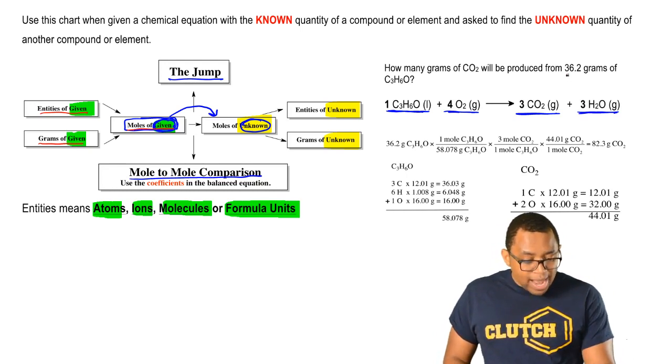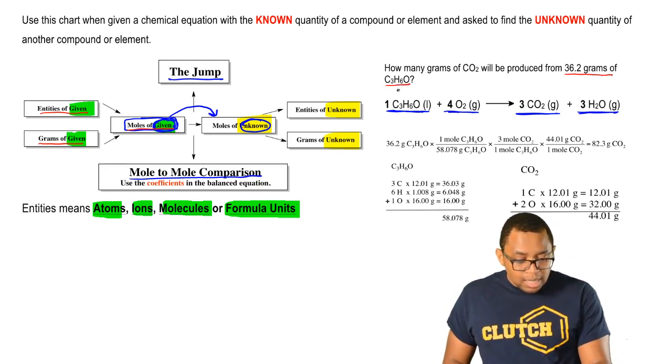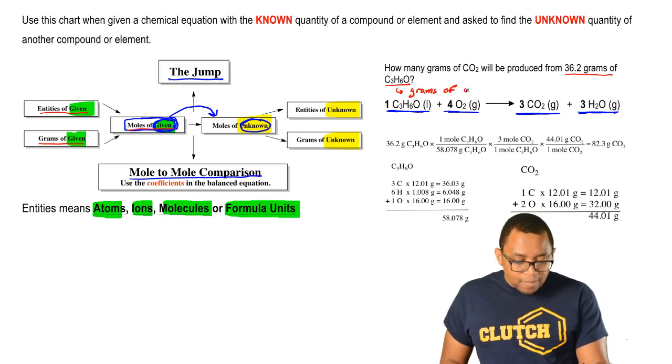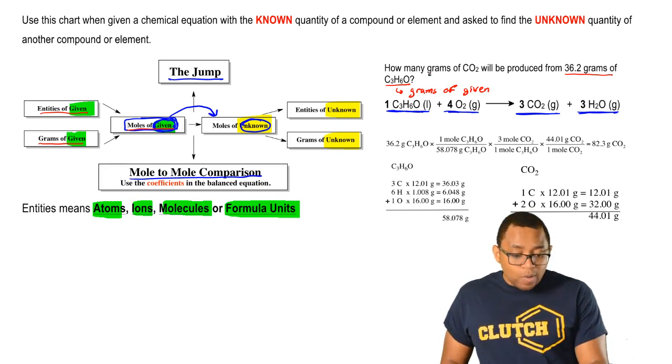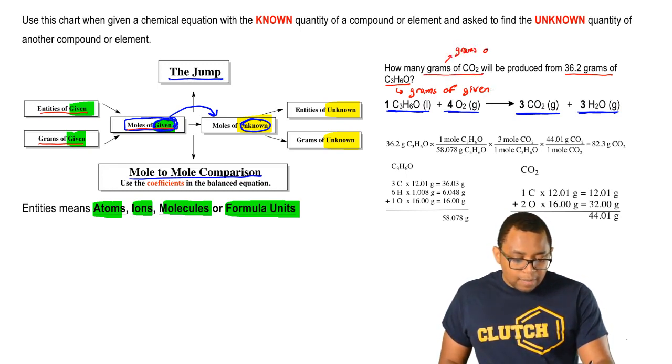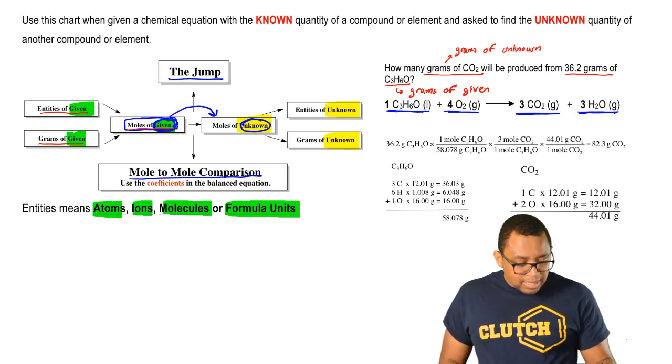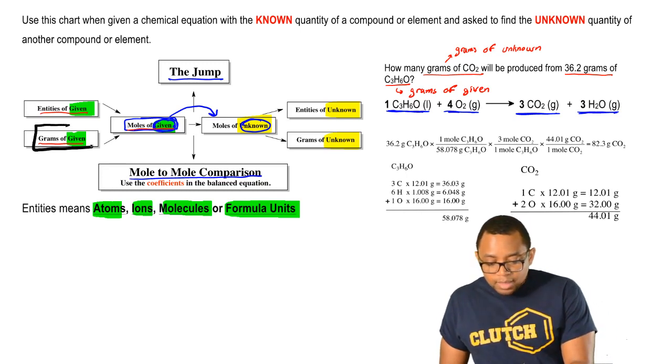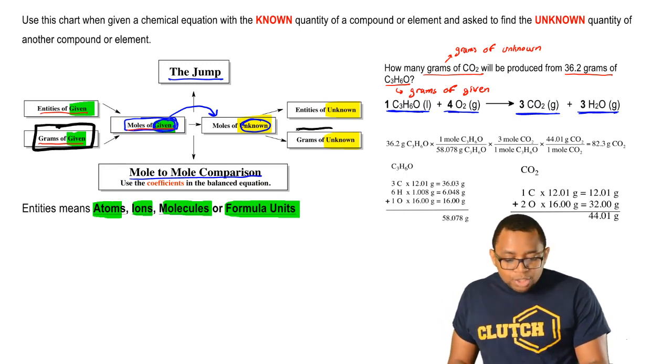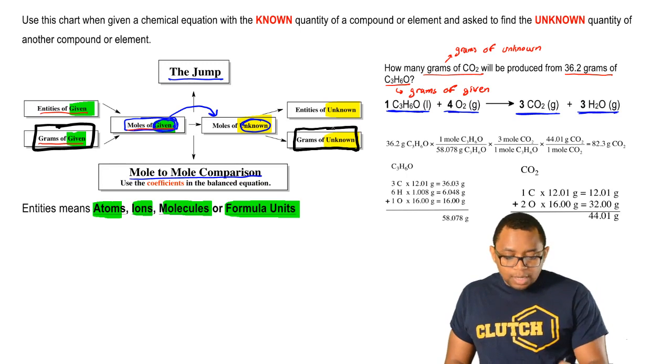Now, realize that they give me grams of acetone, so that represents my grams of given information. Then they're asking me to find grams of CO2, so that represents my grams of unknown. That just means that on our stoichiometric chart, we're going from this space here and we have to journey all the way to over here.